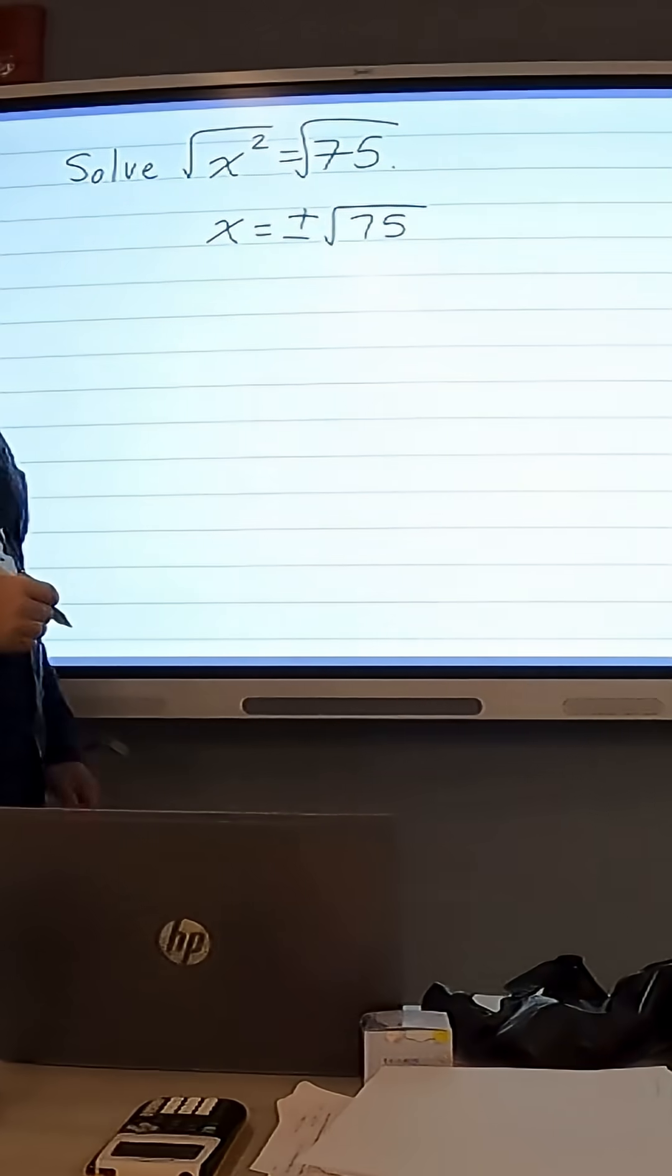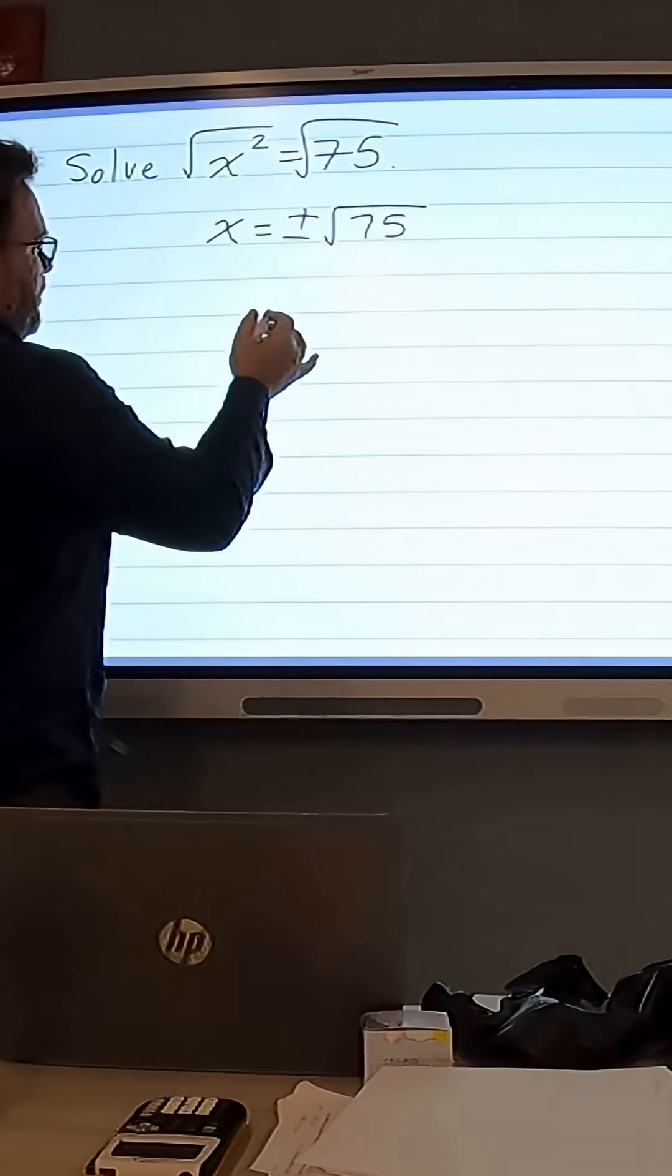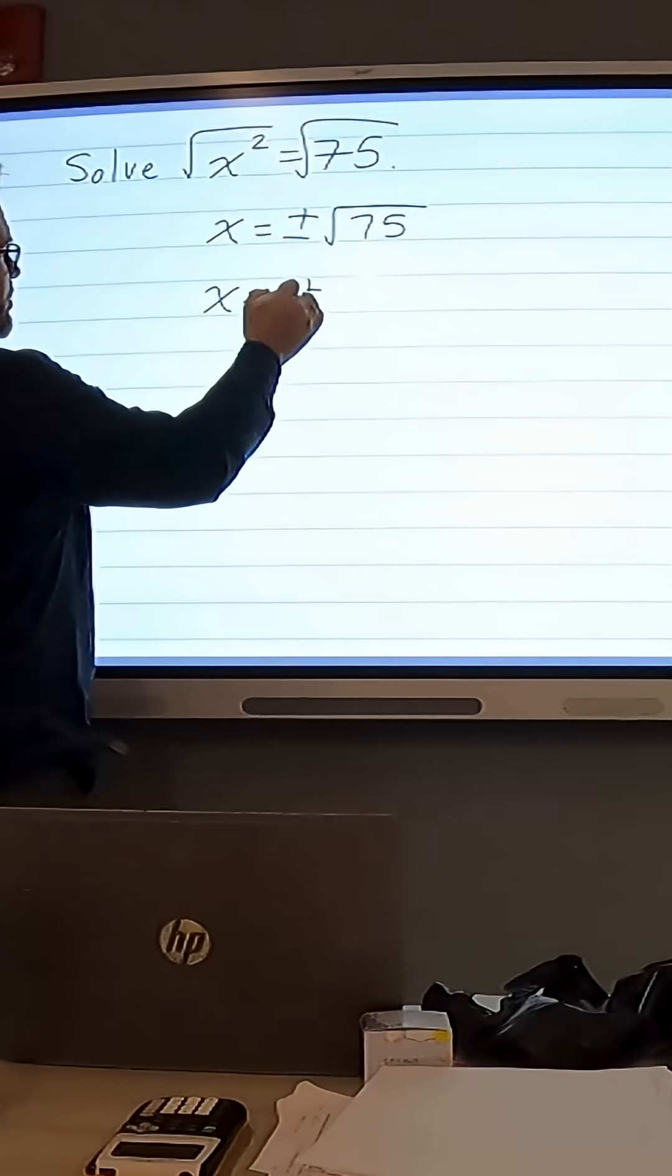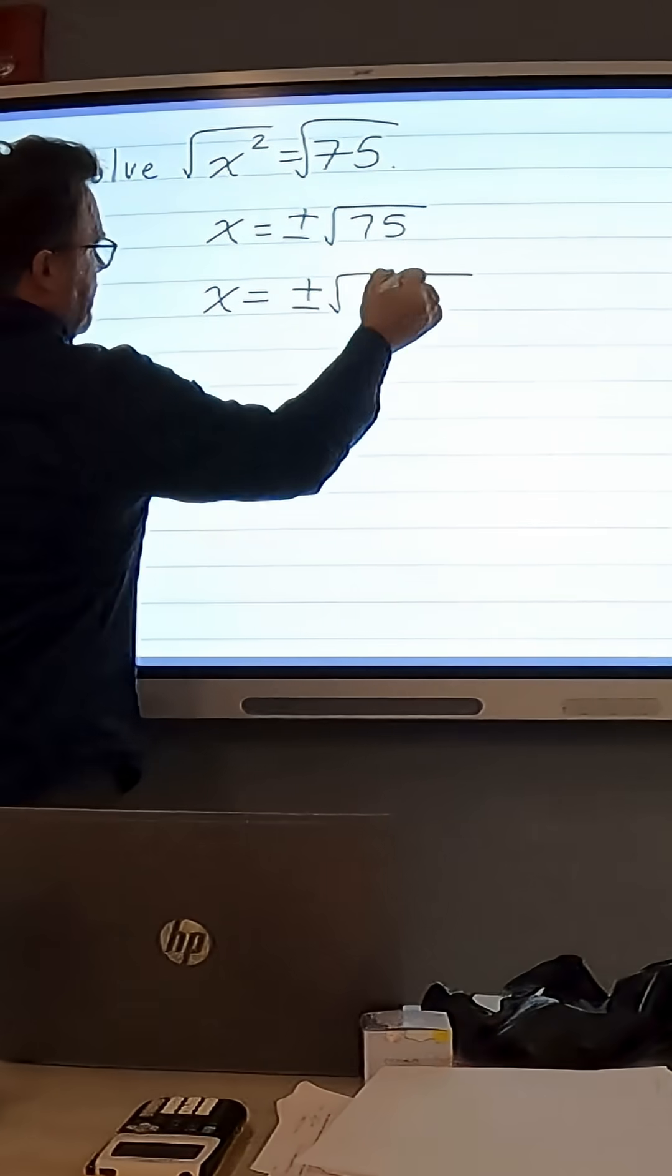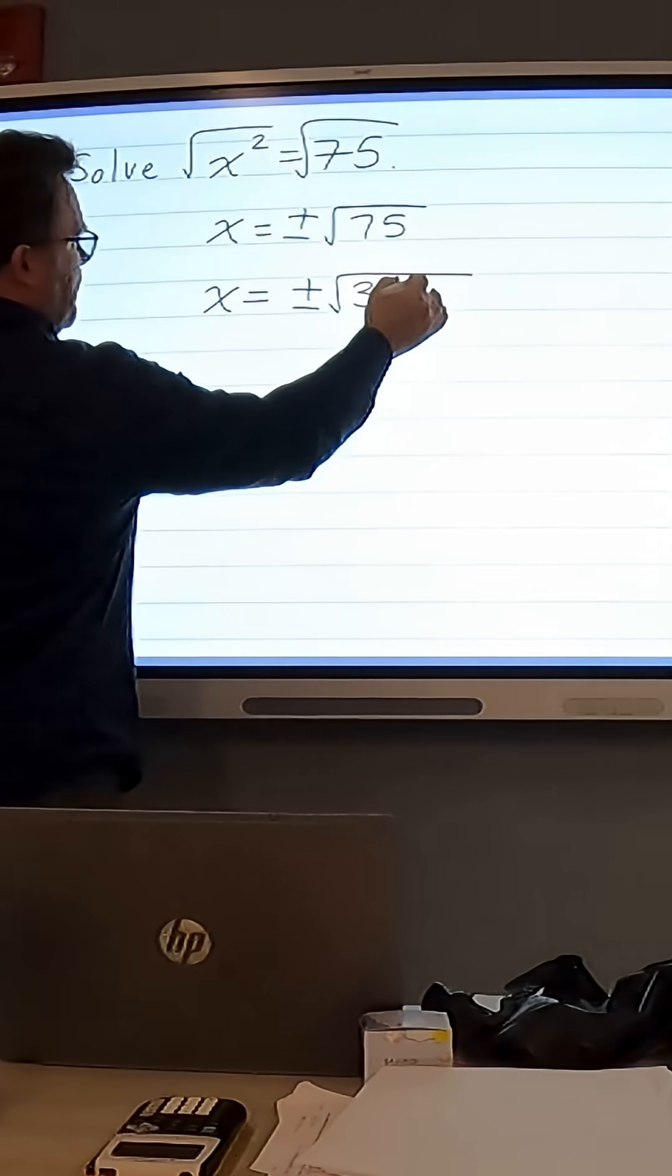Now we want to break down 75 a bit. One way we can break that down is into x equals plus or minus 3 times the square root of 25.